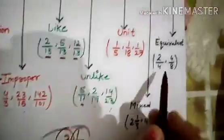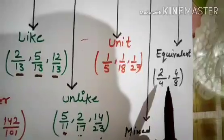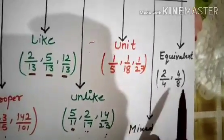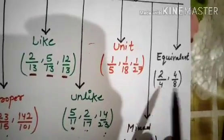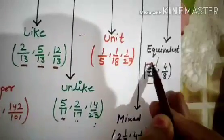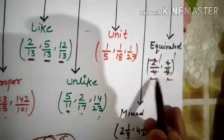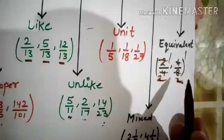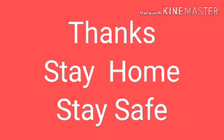The last type is the Equivalent Fraction — fractions that have the same value even when they look different. For example, 2 by 4 and 4 by 8 look different but have the same value. When we reduce them to their simplest form: 2 by 4 simplifies to 1 by 2, and 4 by 8 also simplifies to 1 by 2. Their value is the same, so these are Equivalent Fractions. I hope the types of Fractions are clear to you. Thank you, have a nice day.